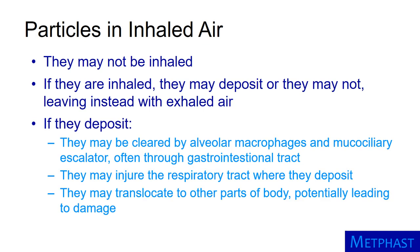For particles that deposit, where they deposit in the respiratory tract helps to determine the health consequences of particle exposures. Depending on where particles deposit, they may be cleared from the respiratory tract by alveolar macrophages and the mucociliary escalator, often through the gastrointestinal tract, without causing harm. Or they may cause direct injury to the respiratory tract where they deposit. Or they may translocate to other parts of the body via blood or lymphatic circulation or along sensory neurons, potentially leading to damage of organs or tissue outside of the respiratory tract.